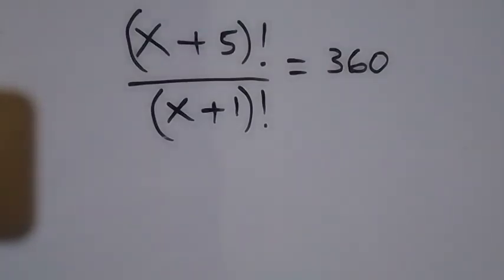Hello, how to solve this problem: (x + 5)! divided by (x + 1)! equals 360.